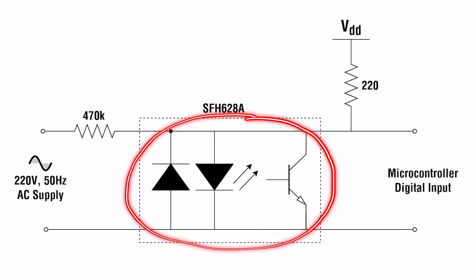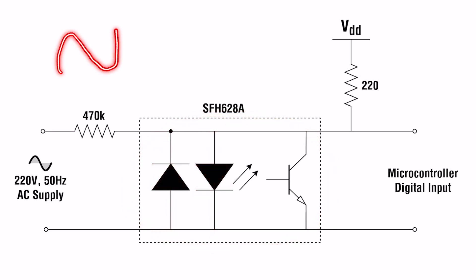I am using an optocoupler with two anti-parallel LEDs at input to implement the zero crossing detector circuit. It generates a pulse each time the AC waveform crosses zero which is then fed to a microcontroller. The resistor is selected to limit the current rating of optocoupler and power rating of the resistor itself.